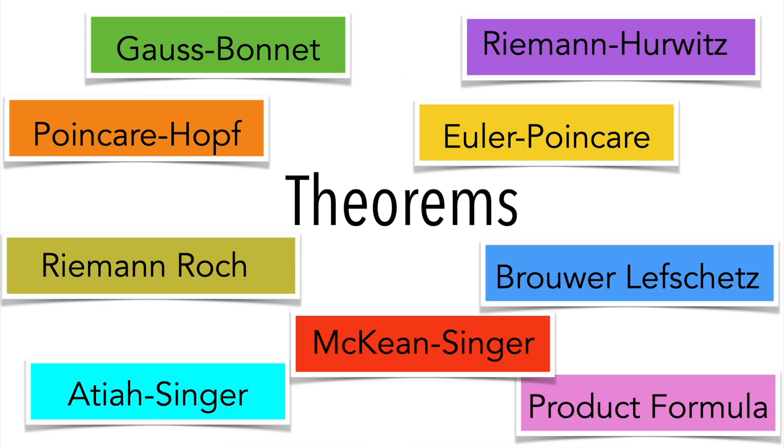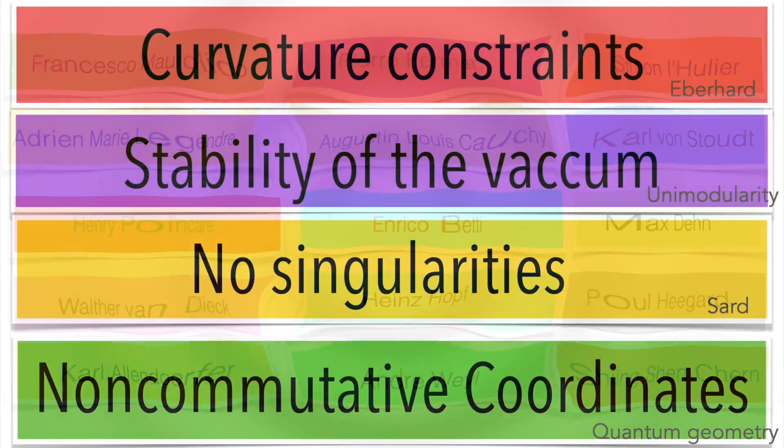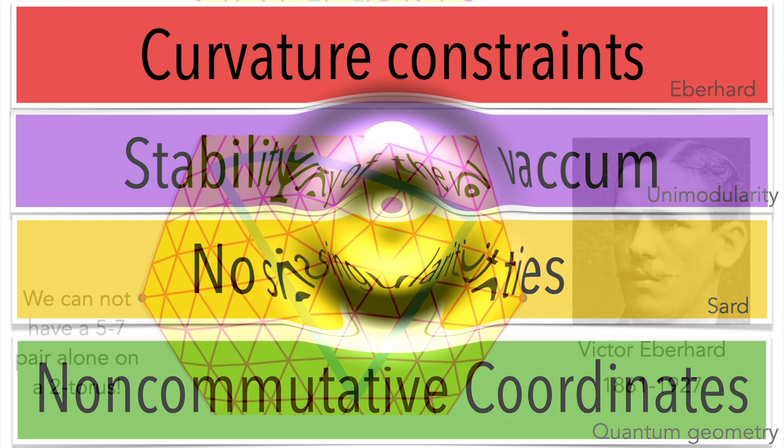Here are just a few theorems dealing with Euler characteristic. Fox has worked on Euler characteristic. Here are some features which are unique in the discrete. Four features. First of all, we have curvature constraints which do not exist in the continuum. There is the stability of the vacuum. If we look at connection calculus, there are no singularities. We look at Saar. Non-commutative coordinates emerge in the discrete.